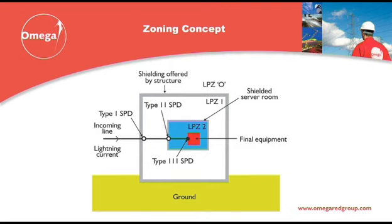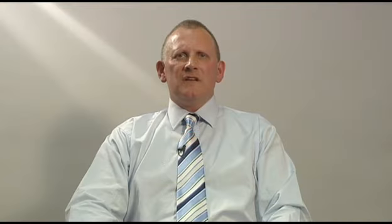Coordination with equipment manufacturers is necessary, as they should have the technical data to allow the lightning protection specialist to determine the various levels of protection required at the boundary of each zone. The different risks associated with R2, risk of loss of service to the public, are addressed in different ways.